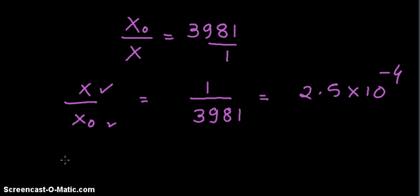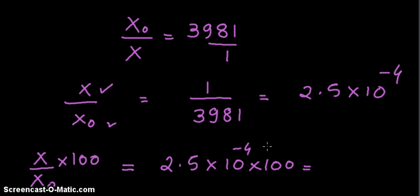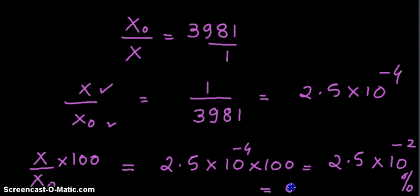And if you want to express this in terms of percentage, then it would be 2.5 into 10 raised to minus 4 multiplied by 100, that is equal to 2.5 into 10 raised to minus 2 percent. So 0.025 percent of the original fraction remains.